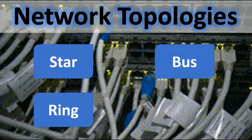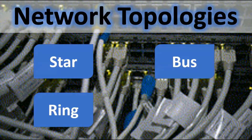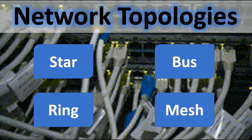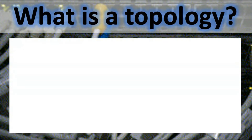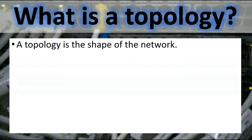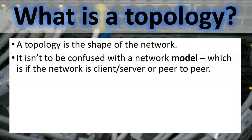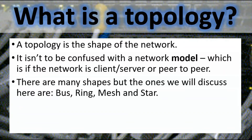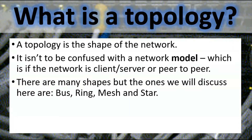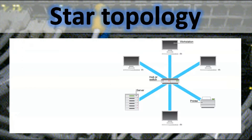Network topologies: star, bus, ring, and mesh. A topology is the shape of the network — it isn't to be confused with a network model, which refers to whether the network is client-server or peer-to-peer. There are many shapes, but the ones we will discuss here are bus, ring, mesh, and star.